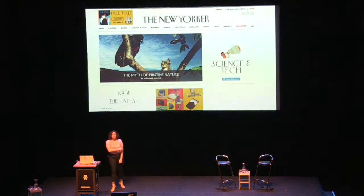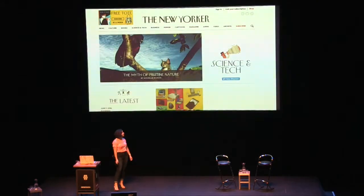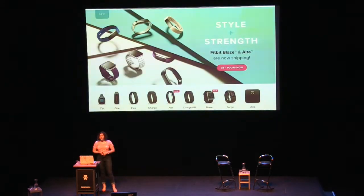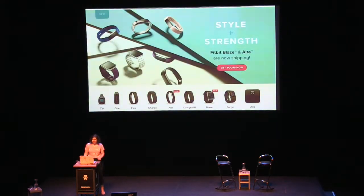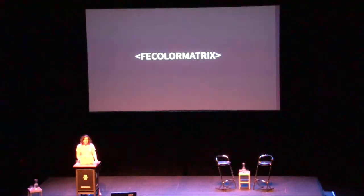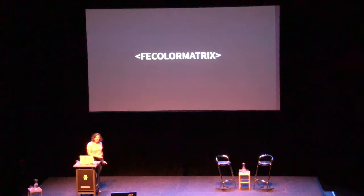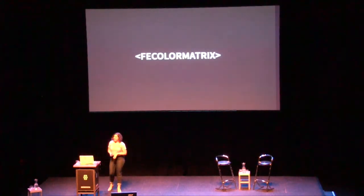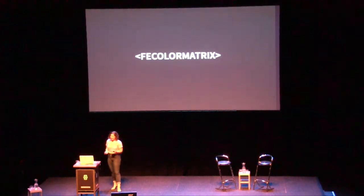This is kind of what it looks like on the web: The New Yorker has the filter applied — it's very subtle but we can make it more intense if we want. Here's an example on the Fitbit website. And voilà, we have Fluxable. The next thing I'm going to talk about is FeColorMatrix, which looks kind of scary, but when you understand what it is it's very powerful and very easy to use.